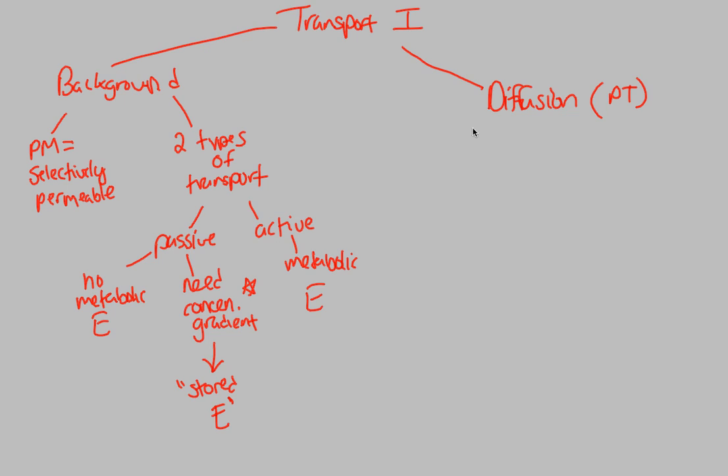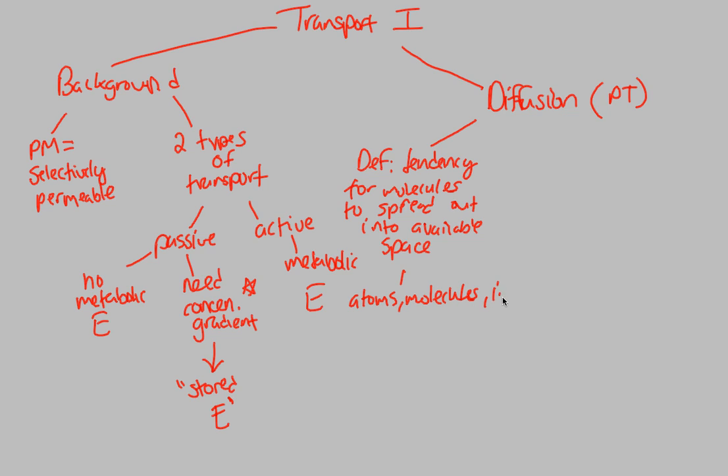So diffusion is defined as, and this is going to be just a basic definition you need to know. It is the tendency for molecules to spread out into available space. Simple as that. Molecules tend to spread out. That's what diffusion relies on and talks about. And when we say this, we mean also atoms. We also mean molecules, of course, just like the definition stated. We also mean ions. These types of things have the tendency to spread out into the available space.